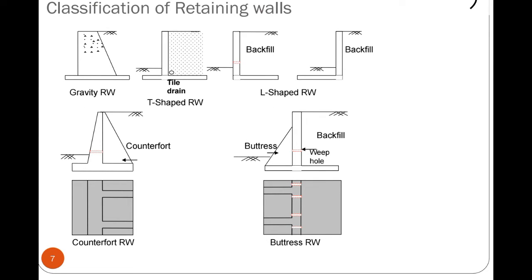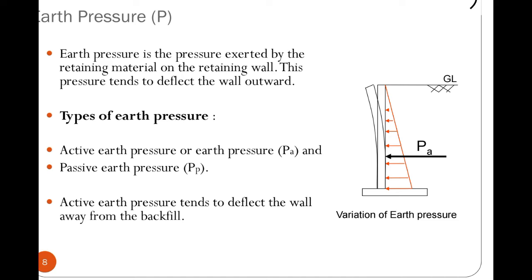The picture representation of the classification of retaining walls shows: the first is a gravity retaining wall, the second is a T-shaped retaining wall, then an L-shaped retaining wall where the backfill is retained by the L-shape, then counterfort retaining walls where at particular distances there are counterforts, and also the cantilever retaining wall which prevents the soil from sliding.